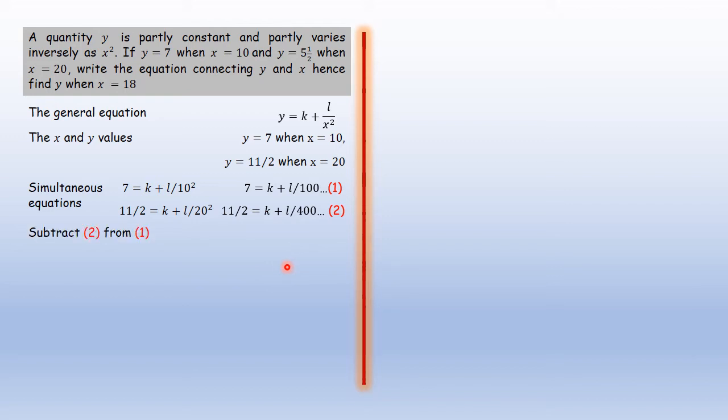And therefore, as we solve that, we're going to subtract equation 2 from equation 1 to eliminate k, where I'm going to get 3/2 = 3l/400. And if you simplify that, l = 200.